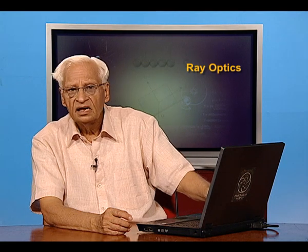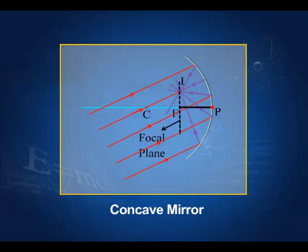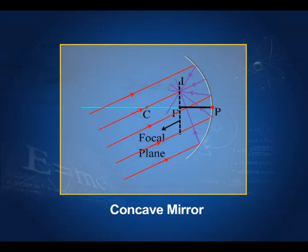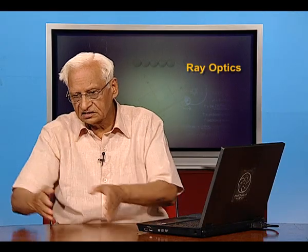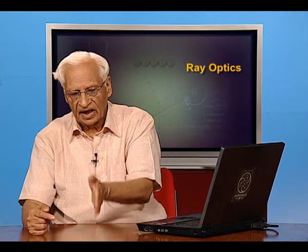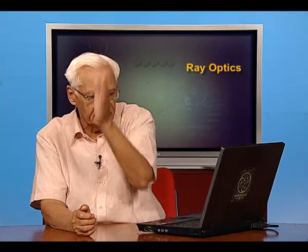It is not necessary that parallel rays are always parallel to the axis. They may be inclined to the axis but still parallel. After reflection, they will meet at a point — but this point is not on the axis. This point is in a plane which passes through the focus and is perpendicular to the axis. This plane is called the focal plane, and the focal point lies on the axis within it. Rays inclined but parallel to each other meet at a point in this focal plane after reflection.